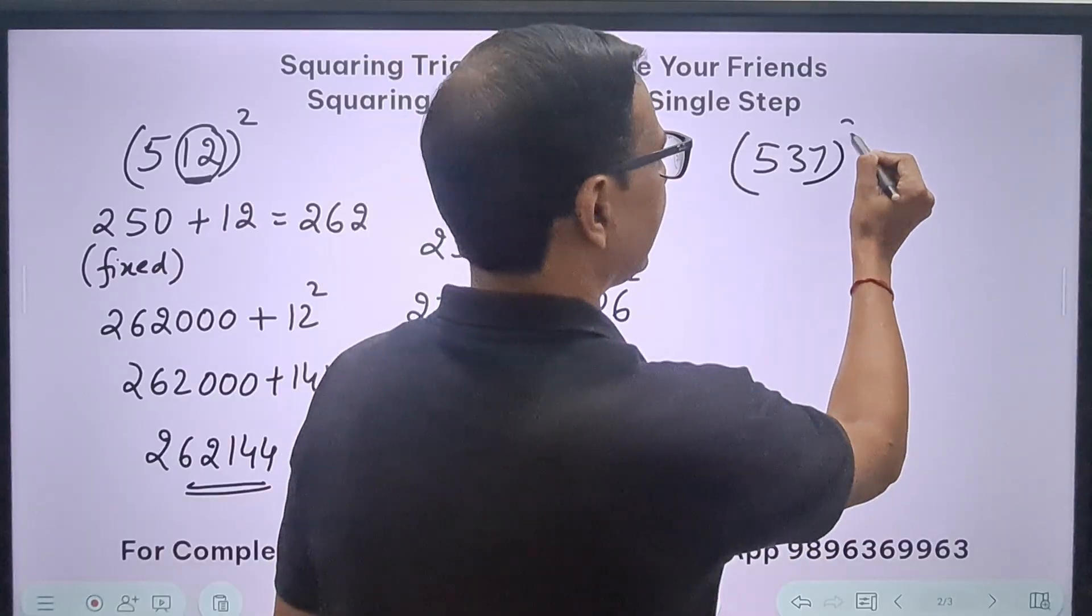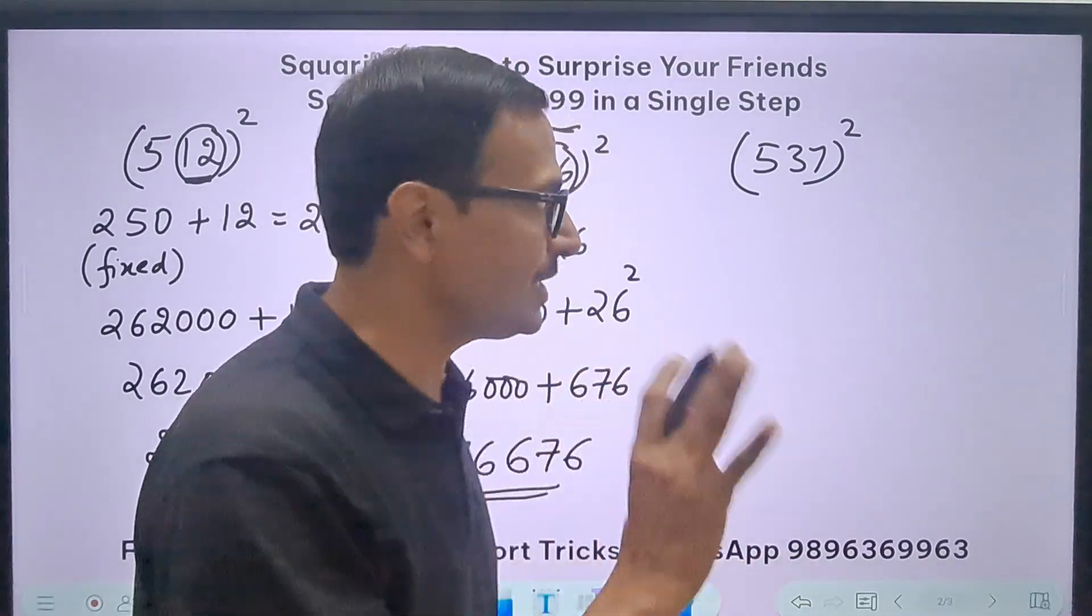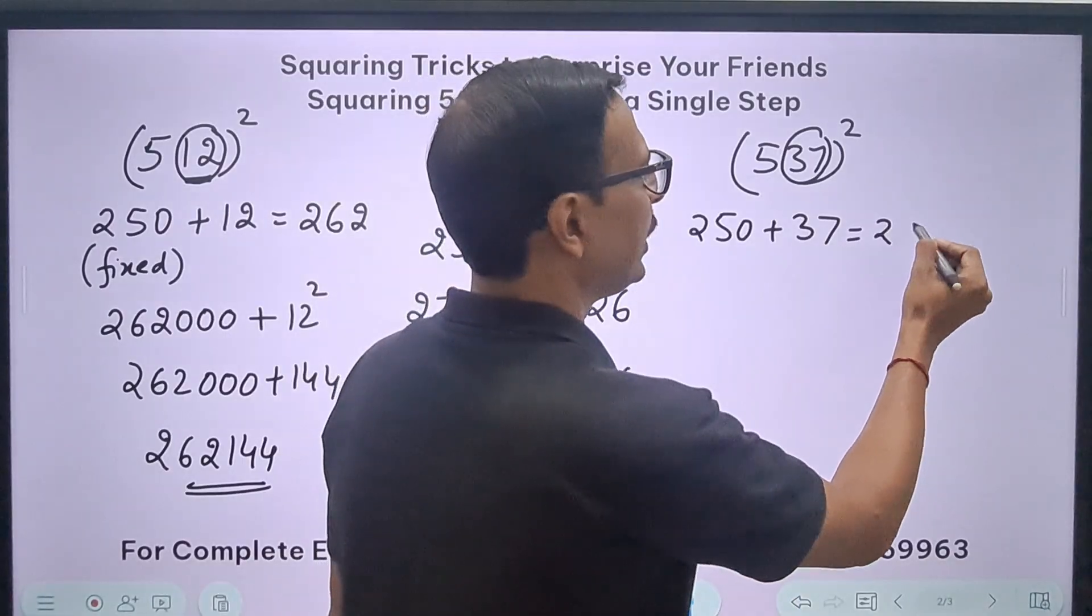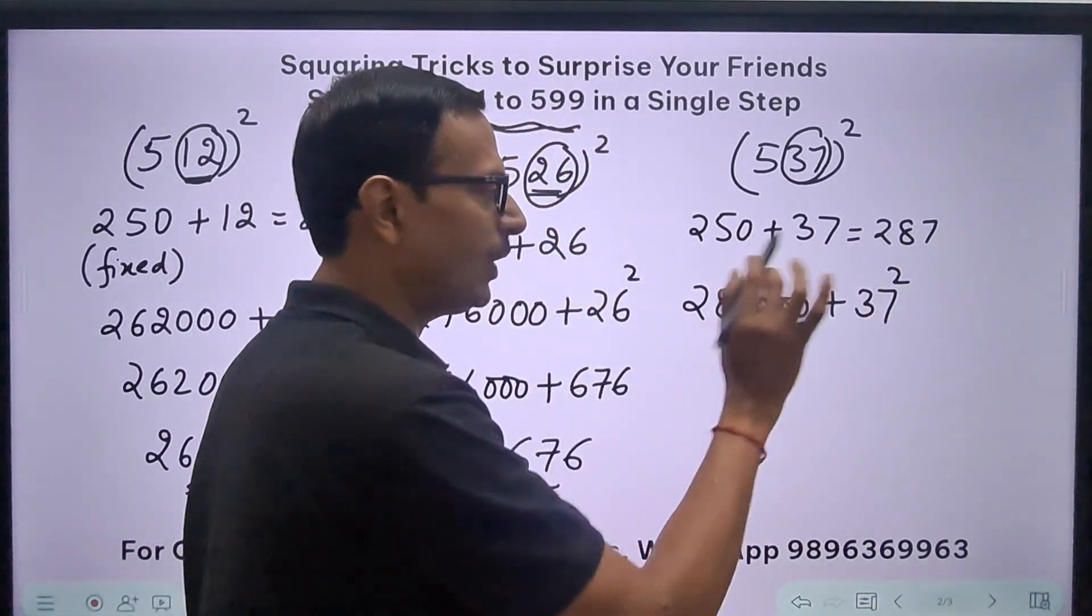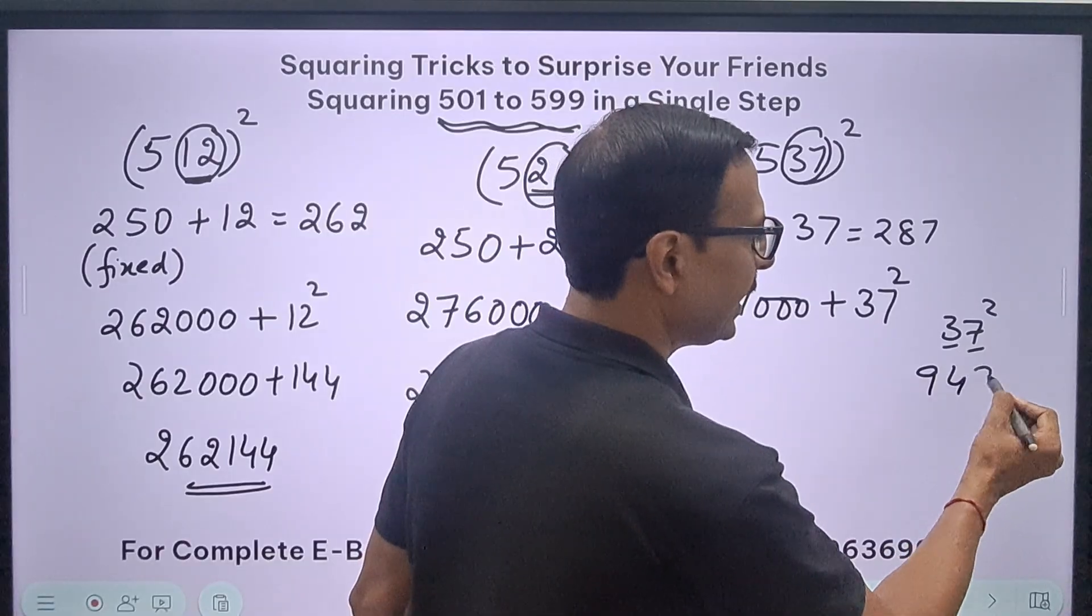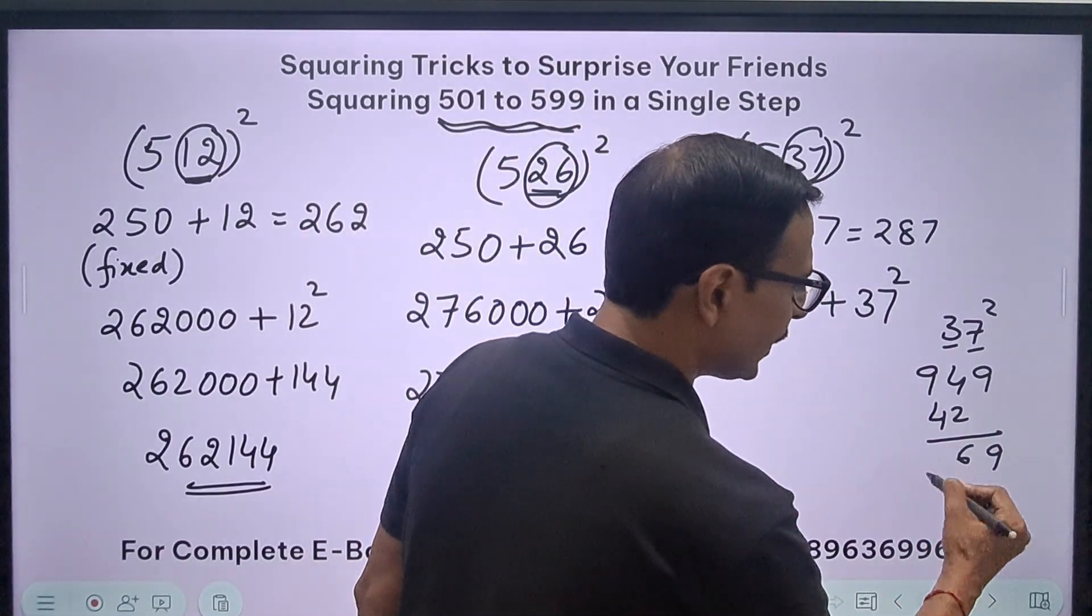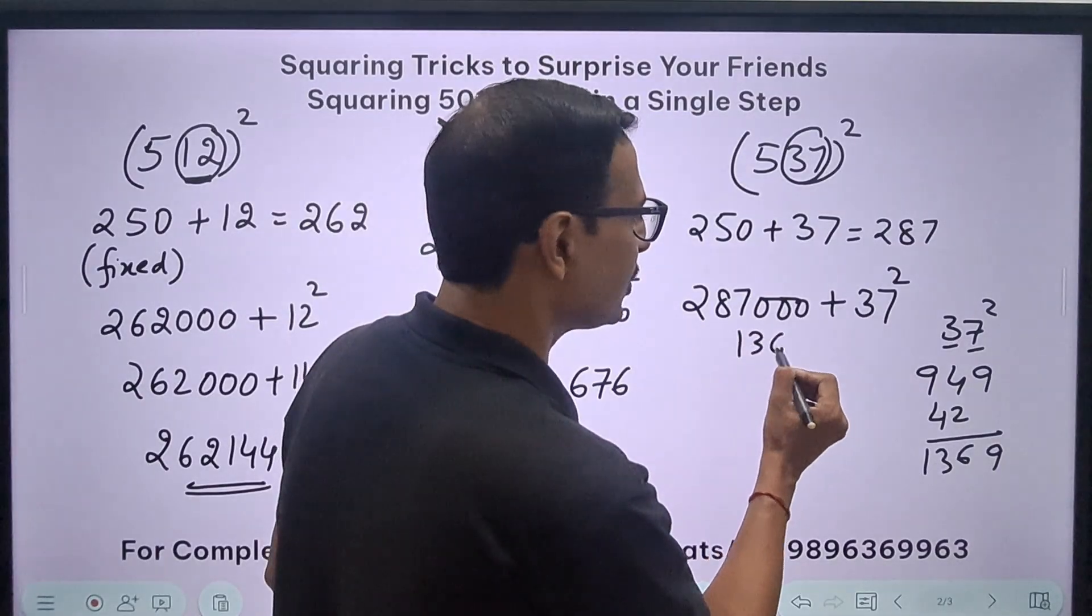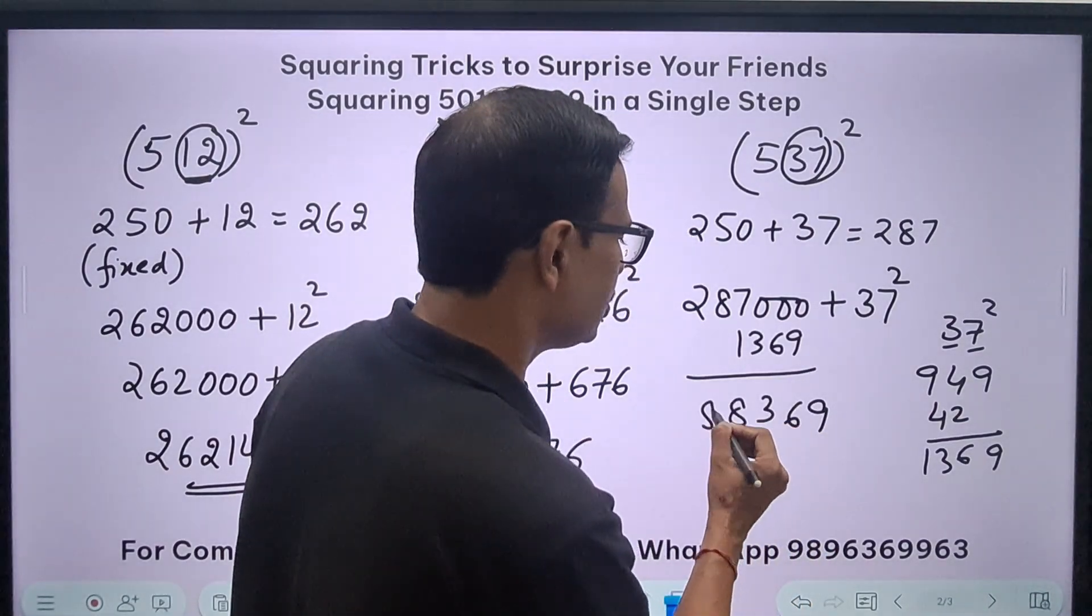So I will be using the method for 537. I will be using the method of squaring. 250 is the fixed number plus I have to add 37 here, this number. So that gives me 287, and 287 triple 0 plus 37 square. Now I need to find 37 square. So for finding 37 square, what will I do? 3 square is 9, 7 square is 49, and then 3 times 7 are 21, double is 42. I will write 42 here and add vertically: 9, 6, 13. So 1369 is the square of 37. We have to do that very quickly. So 1369 I will write here because I have to add it to 287000, and my answer will be 288369.